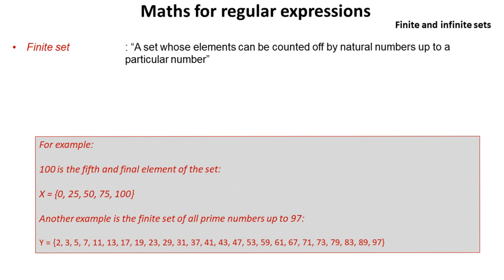So now we've gone through some of the common sets, let's look at some of the other terminology used in regular expressions. First of all, a finite set. This is a set whose elements could be counted off by the natural numbers up to a particular number. Here's a finite set, and we can say 100 is the fifth and final number in this set. It's a set whose each individual elements can be counted off by natural numbers up to a particular number. Another example is the finite set of all prime numbers up to 97.